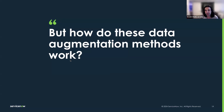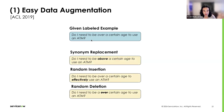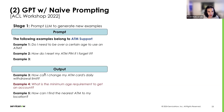How do these methods work? Easy Data Augmentation, revisiting the example 'Do I need to be over a certain age to use an ATM?', performs replacements like changing 'over' to 'above', adding adjectives like 'effectively', or removing words like 'over'. For GPT with Naive Prompting, we prompt an LLM — in this case GPT-3.5. To generate examples for the ATM support class, we provide a few labeled examples as a prompt, and GPT generates more examples, such as 'How can I change my ATM card's daily withdrawal limit?'